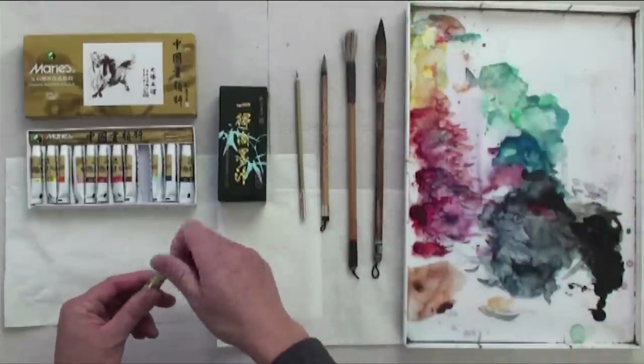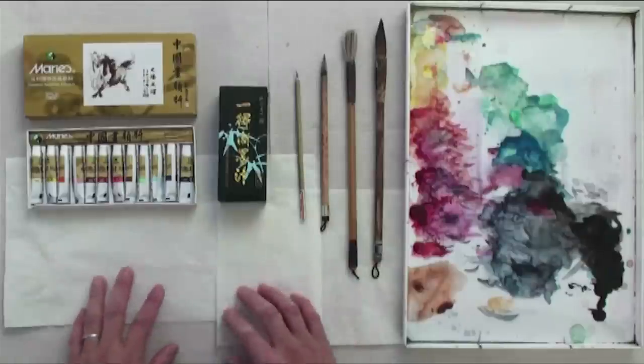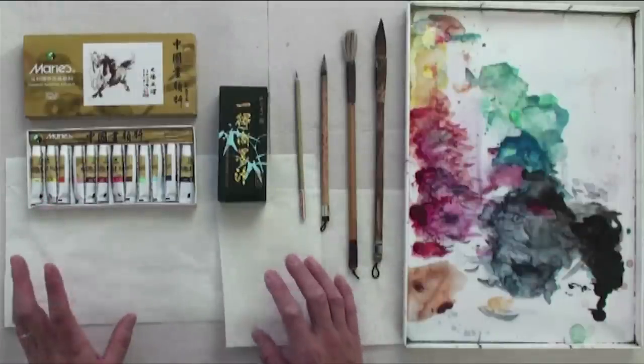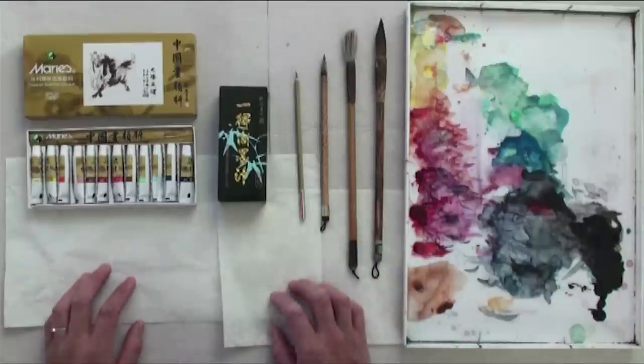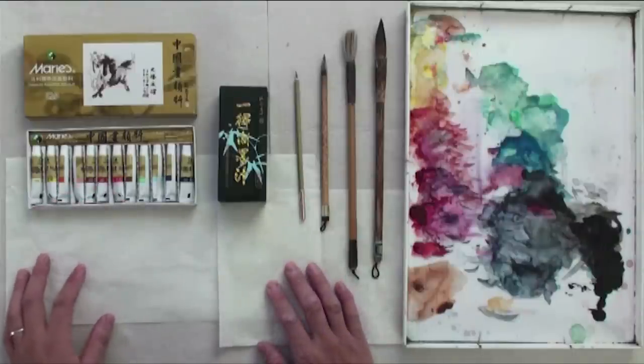This is just like watercolor. The difference between Chinese painting color and watercolor is this: Chinese painting color has more opacity and more glue in it, so it does not blend as much as watercolor. In fact, the character of Chinese painting color is between watercolor and gouache.